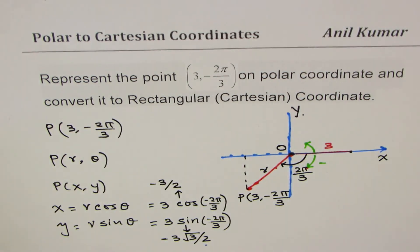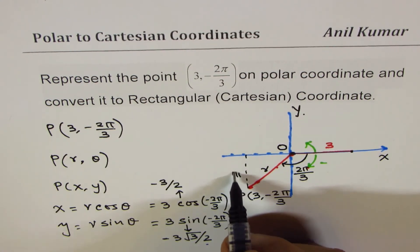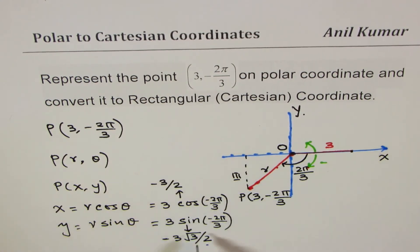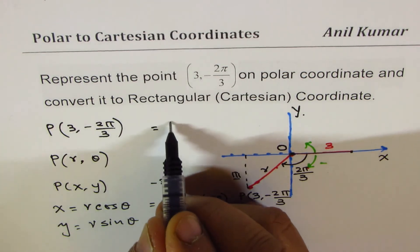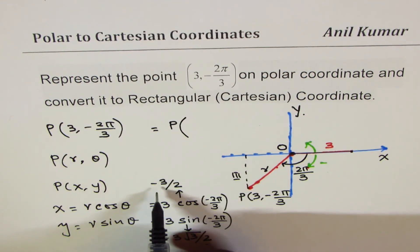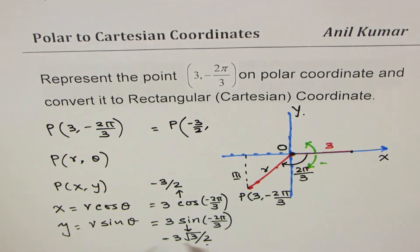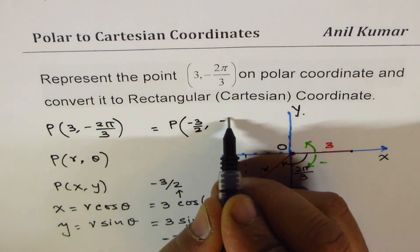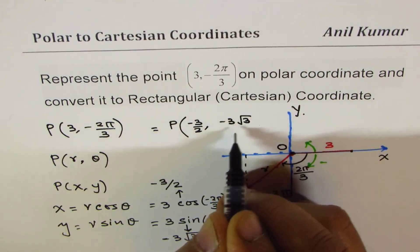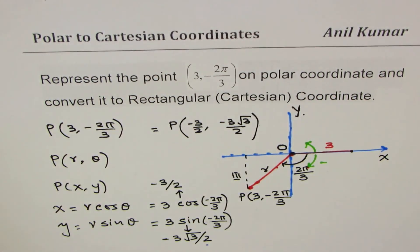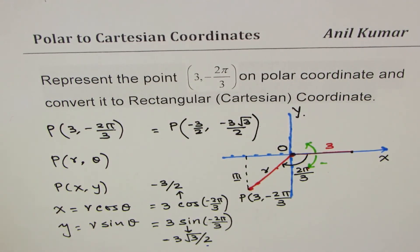As you can see, both are negative, so you are in quadrant 3, and that is what is expected. Therefore, I could write this point as (-3/2, -3√3/2). So that becomes the coordinate point in the Cartesian plane.